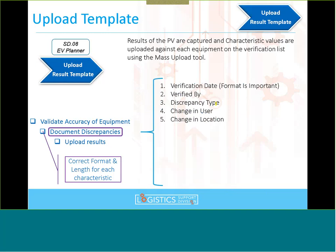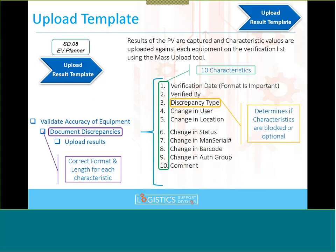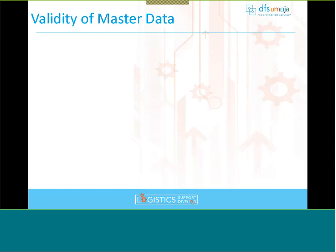The three mandatory fields are: verification date, verified by, and discrepancy type. Then there are fields that become either blocked or optional depending on the discrepancy type selected: change in user, change in location, change in status, change in serial number, change in barcode, change in authorization group, and a comment column. We have 10 characteristics in total, and the discrepancy type selected determines whether they are blocked or optional.